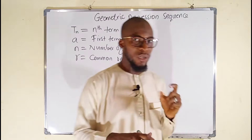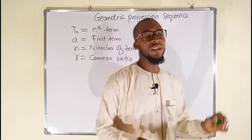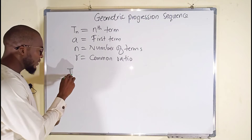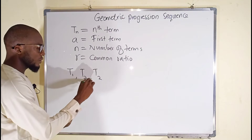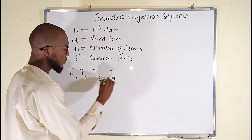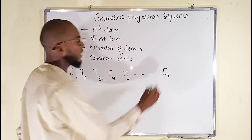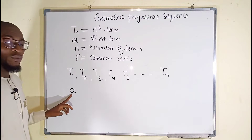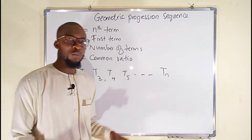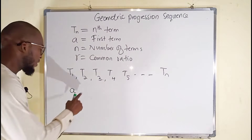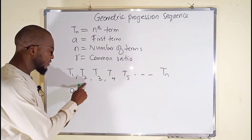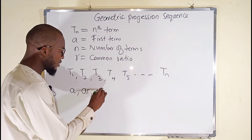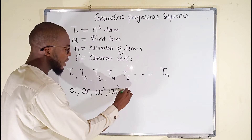We are going to solve some problems, but first let us derive the general formula used to find every single term in the sequence. Tn denotes the number of terms. When n is 1, we have t1, then t2, in that order, after tn. We have seen that a denotes the first term. Therefore, the first term is always a. We use the common ratio to multiply a term to get the next term. Taking the first term multiplied by the common ratio, you get term number 2: a multiplied by r is ar. Take this term, multiply by the common ratio, you get ar squared, ar cubed, ar to the fourth power.